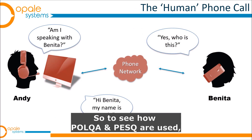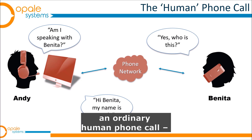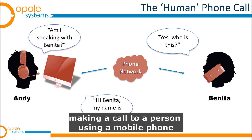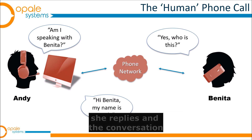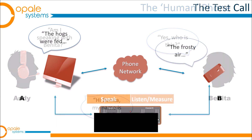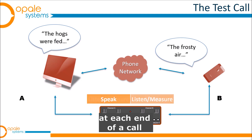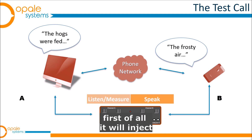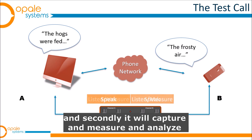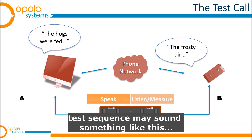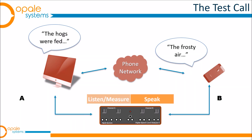To see how POLQA and PESQ are used, let's go back to an ordinary human phone call — a person in a call center calling someone on a mobile phone. The use of POLQA and PESQ simply consists of replacing those two users at each end of a call with a measuring system. This system does two things: first, it injects a clean reference speech signal into one end of the call, and second, it captures, measures, and analyzes that signal at the far end. A typical test sequence may sound something like: 'The frosty air passed through the coat. The hogs were fed chopped corn and garbage.'